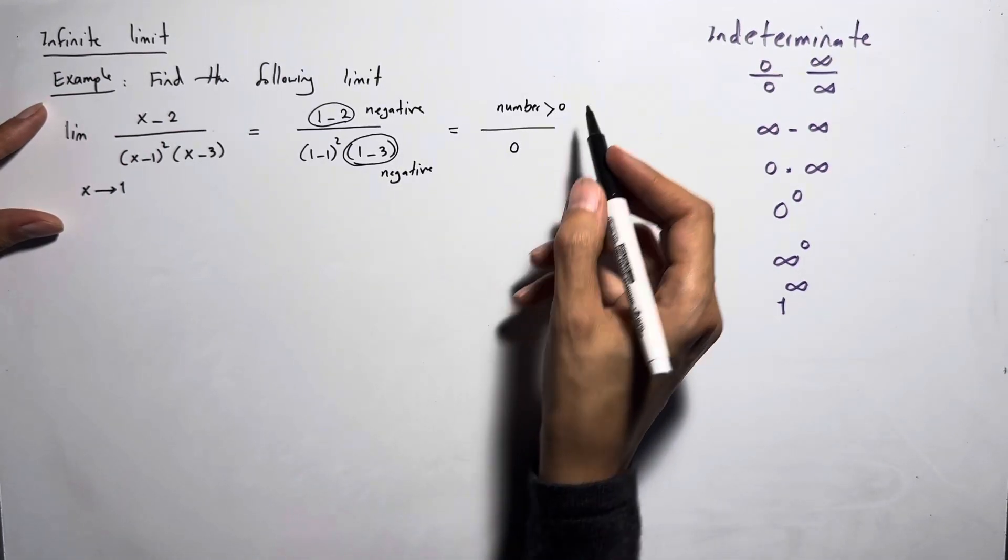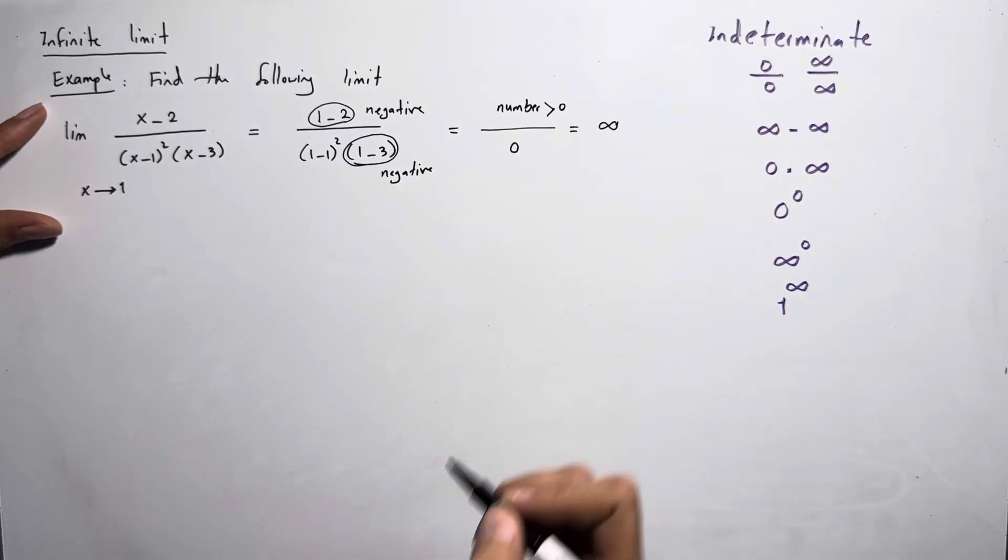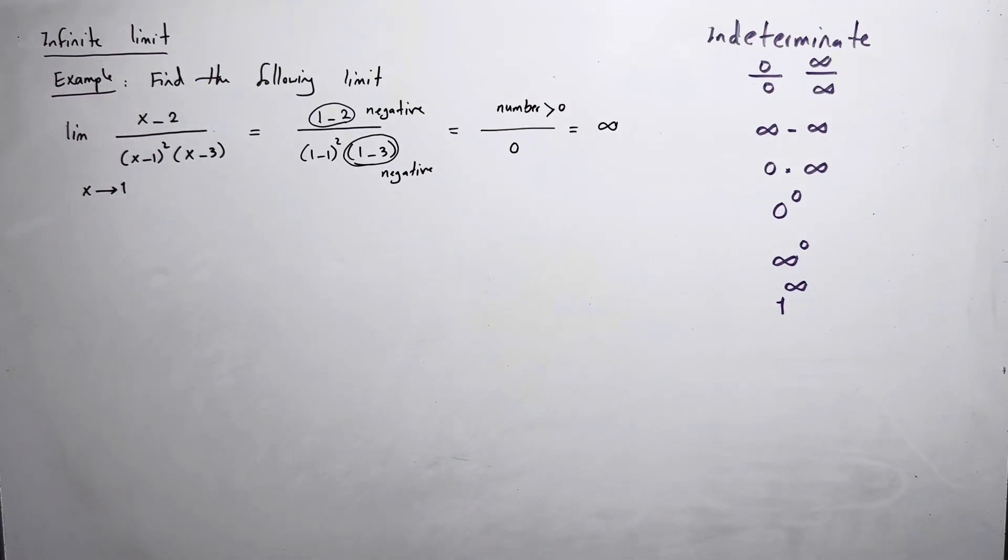A positive number divided by 0 gives you positive infinity. We can look at the graph of the function as well. The graph of the function behaves like this.